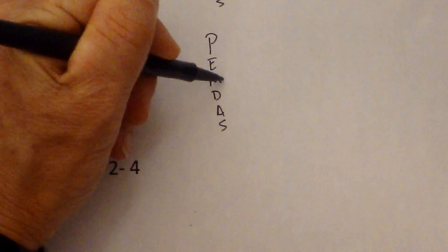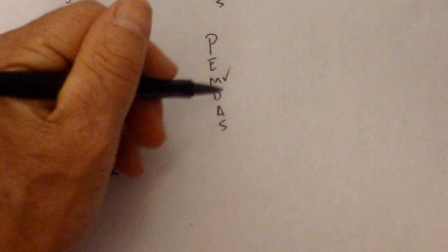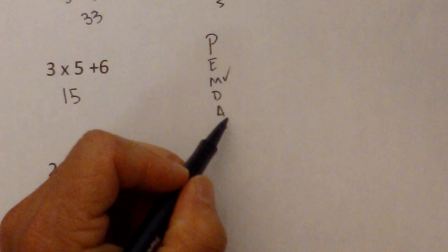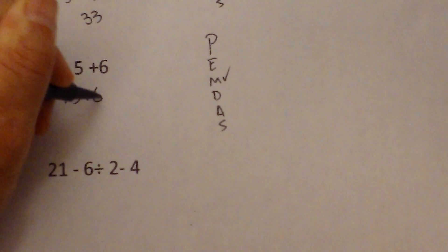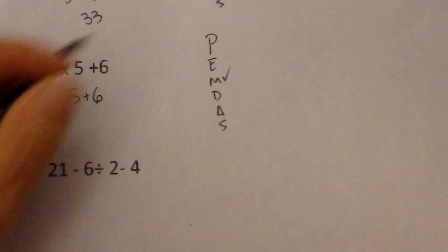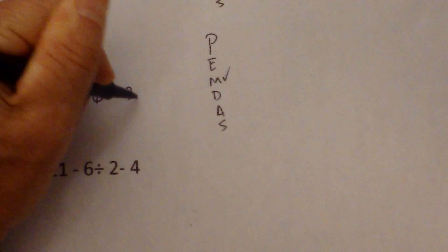So I've checked off multiplication. There's no division. Is there addition? Yes. So I'm going to bring down the 6 and then 15 plus 6 is 21.